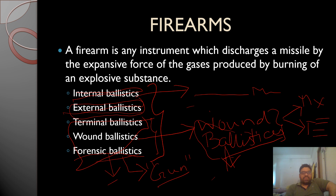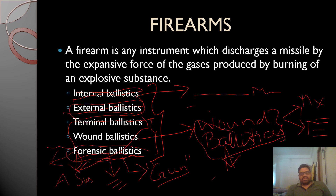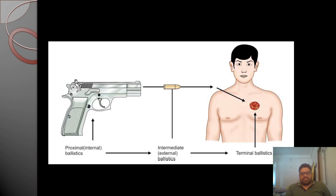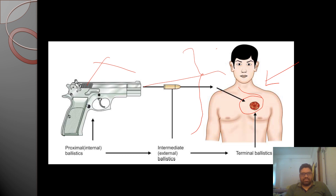If a victim is alive we treat him; if he has expired, we determine at autopsy the type of firearm used, the number of rounds fired, and the vital structures damaged. Forensic ballistics is a related term concerned with investigating the scene of crime — collecting dispersed materials, using autopsy findings, and matching recovered weapons to suspects.